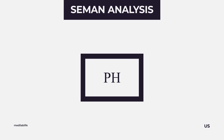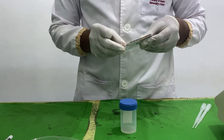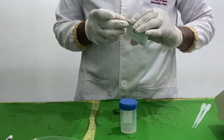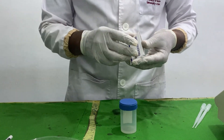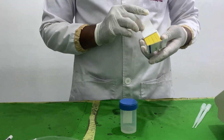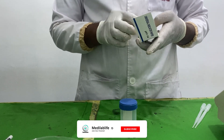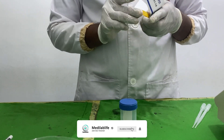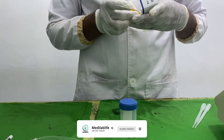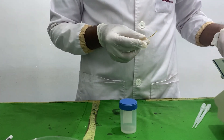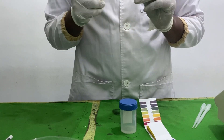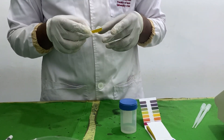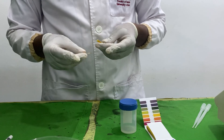pH: Take a strip of either broad range or narrow range pH paper and touch one surface onto the semen sample. Observe the pH paper for color change. A more accurate laboratory pH meter can also be used to determine the pH. Normal semen has a slightly alkaline pH ranging from approximately 7.2 to 8. Acidic semen could be indicative of a blockage in one or both seminal vesicles; high alkaline pH could be a result of infection.